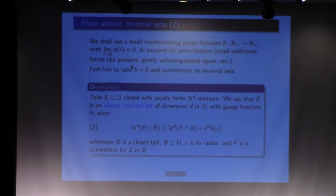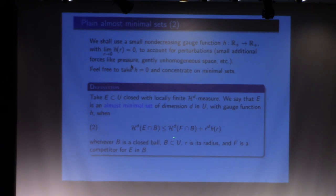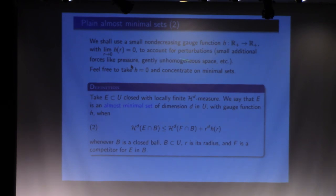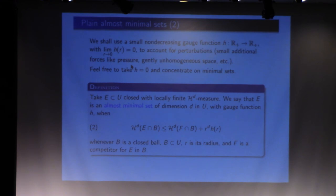There is a comment about sliding competitors. An almost minimal set — plain, meaning no boundary — is given by this definition: the set is better than any of its competitors in the sense that it has less Hausdorff measure, except maybe a small error given by r^d times h(r), where h(r) tends to zero. This tells you the size of the errors. I call this the gauge function; it's non-decreasing, tending to zero. An almost minimal set is essentially better than all competitors in any ball.